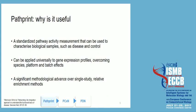Pathprint is useful because it is a standardized way of measuring pathway activity, which can be used, for example, in characterizing biological samples if you want to compare disease and control. A very important point is that it can be applied to every gene expression profile because it overcomes species, platform, and batch effects, as shown in the paper cited alongside Pathprint. This is a significant methodological advantage over single study and relative enrichment methods.